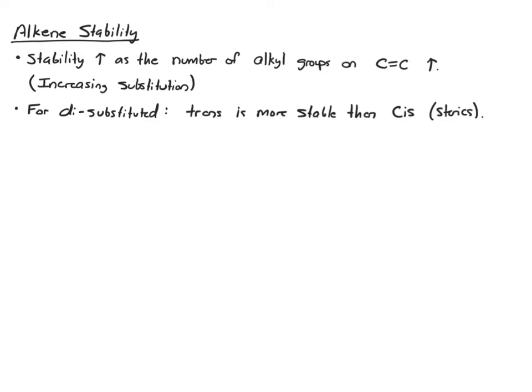The second thing, for disubstituted alkenes, trans alkenes are more stable than cis, and that's a steric issue. Trans puts the groups further apart, that makes them happier. Cis, they're closer together.